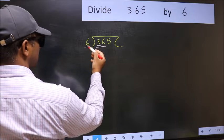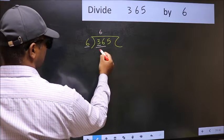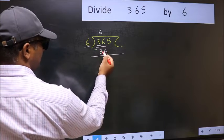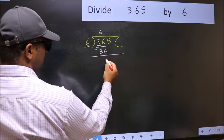When do we get 36 in 6 table? 6 times 6 is 36. Now you should subtract. 36 minus 36 is 0.